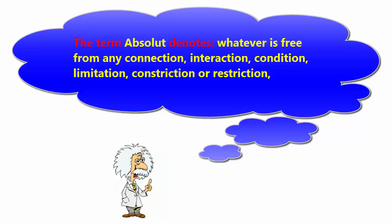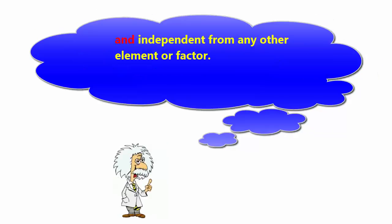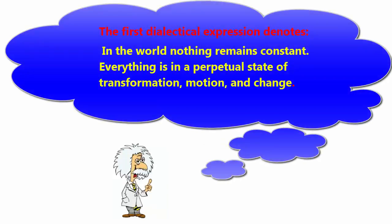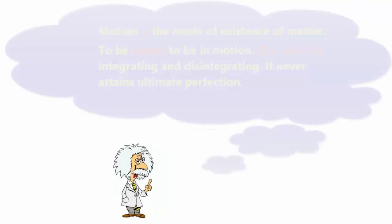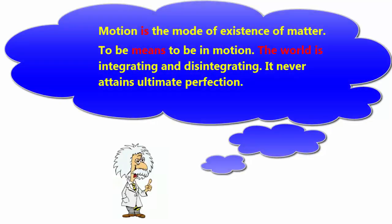The term 'obsolete' denotes whatever is free from any connection, interaction, condition, limitation, constriction or restriction, and independent from any other element or factor. The first dialectical expression denotes that in the world nothing remains constant. Everything is in a perpetual state of transformation, motion, and change. Motion is the mode of existence of matter. To be means to be in motion. The world is integrating and disintegrating and never attains ultimate perfection.